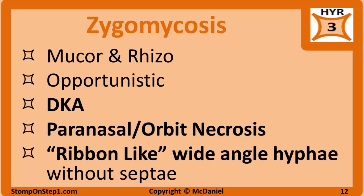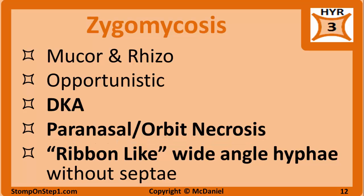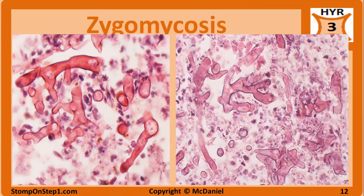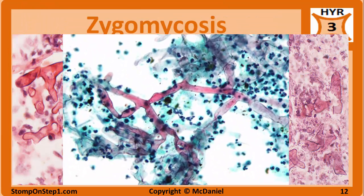Mucor and Rhizopus, also known as zygomycosis, are opportunistic mycoses usually seen in diabetics, most often during ketoacidosis. It results in an infection of the paranasal sinuses or the eye that can extend into the brain. The fungi infect the vessels and can form a clot, leading to a necrotic black eschar. Histologically, it has ribbon-like hyphae without septae, branching at wide angles of about 90 degrees.